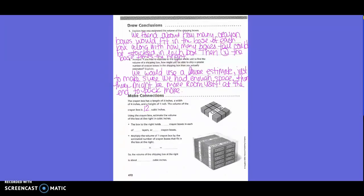Using the crayon box, estimate the volume of the box at the right in cubic inches. The box to the right holds how many crayon boxes, guys? On the bottom layer. How many are there? 4. 4, right? Okay, so we know there's 4.